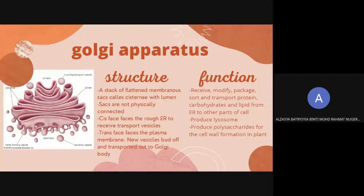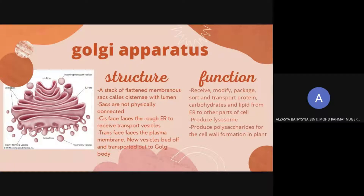Each cisterna are not physically connected — they are separate from one another. The cis phase, which is the entry phase, is the phase for the rough ER to receive transport vesicles. The cis phase is the part seen at the top in the diagram, like the smaller section.